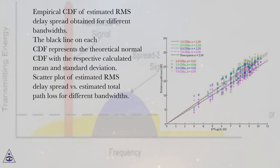Scatter plot of estimated RMS delay spread versus estimated total path loss for different bandwidths.